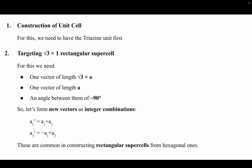Our first step will be to construct the unit cell with the triazine-based layer. The next part will be to make a root-3 × 1 rectangular cell from the hexagonal one. We want a unit vector of length root-3 × a and another vector of length a, with the angle between them as 90 degrees.